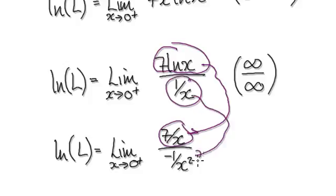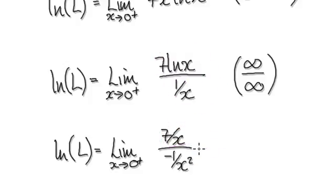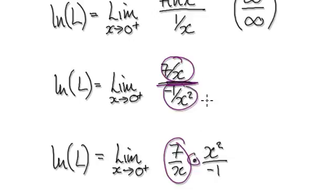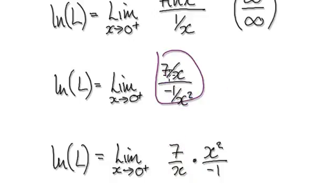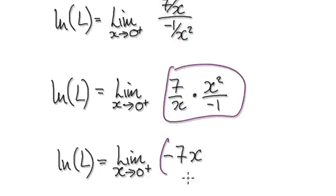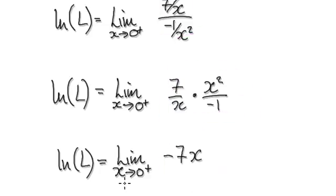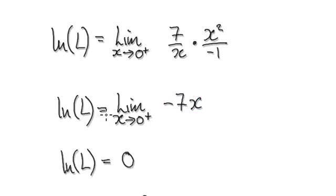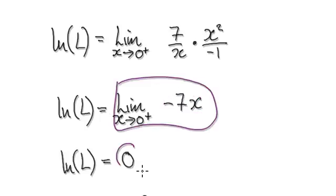Differentiate this — that will give you this. And now differentiate this — that will give you this. Tidy up: you've got this fraction divided by this thing here, but then you times the reciprocal of this. Tidy this whole thing up and it will become this. So now as x tends to zero, the whole thing here will be zero.